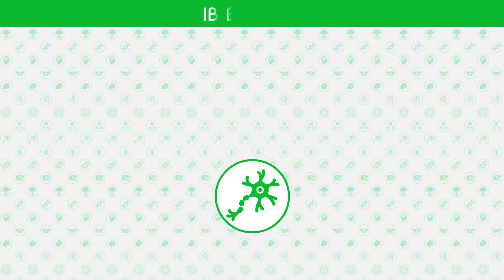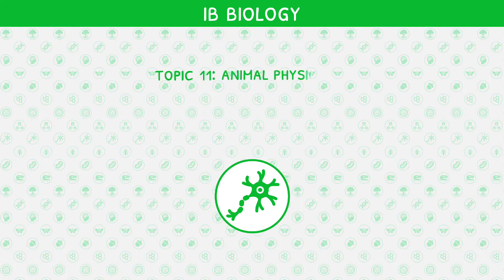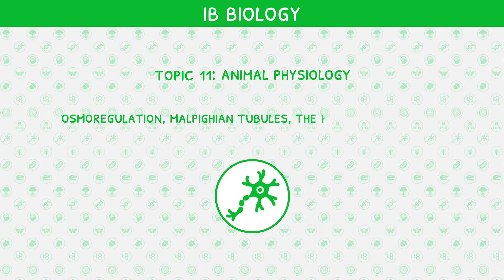Welcome back to our IB Biology video series. This is the third video in IB Biology Topic 11, Animal Physiology, where we will be looking at osmoregulation, Malpighian tubules, the kidneys, and nephrons.